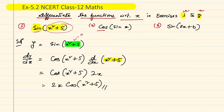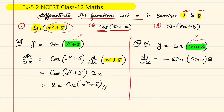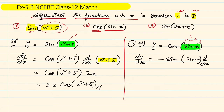Similarly, question number 2 is also a function of function: cos(sin x). Let y = cos(sin x). For dy/dx, first consider sin x as x; the derivative of cos x is −sin x. So we get −sin(sin x), and then we differentiate sin x, whose derivative is cos x. So the answer is −sin(sin x)·cos x.